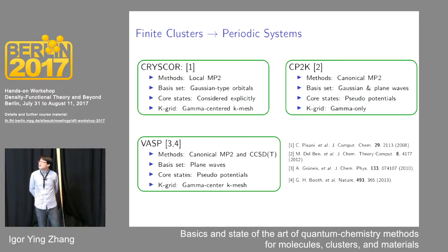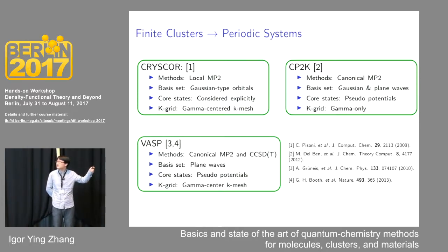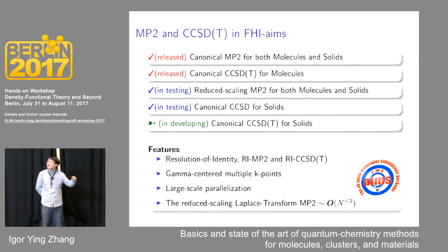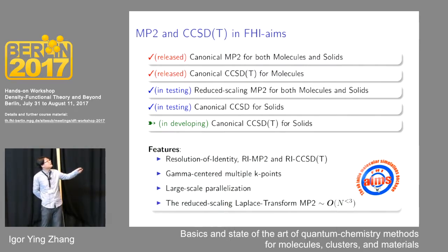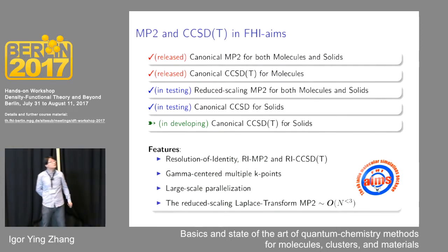Recently it is becoming more and more interesting to implement and test quantum chemistry methods for periodic systems. However, in periodic boundary conditions, all the challenges mentioned above become more serious. Unfortunately, most state-of-the-art developments were proposed and mainly validated for finite molecules. Here I briefly show some current progress in our FHI-aims code. Specifically, we now have canonical MP2 and canonical CCSD(T) for both molecules and solids. The complete CCSD(T) is now available for molecules, and the periodic version is coming soon. More importantly, we now have reduced-scaling MP2 implementation for large molecules and solids with hundreds of atoms. All these implementations use the resolution of identity and feature high parallel efficiency.